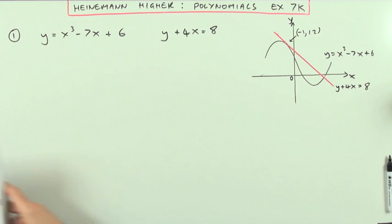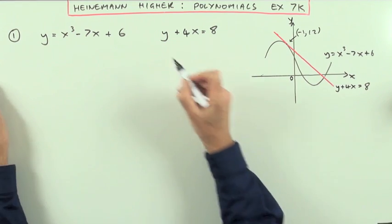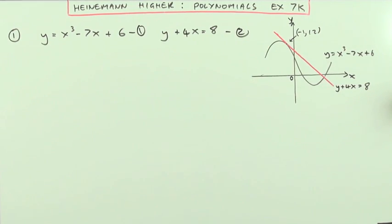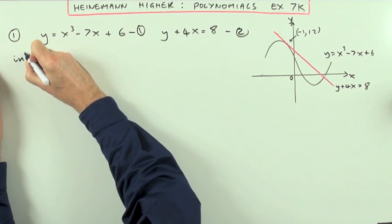Right, well the first step is going to be get the equation for the intersections. So I'll give them names, that's the equation of the curve, that's the equation of the tangent.